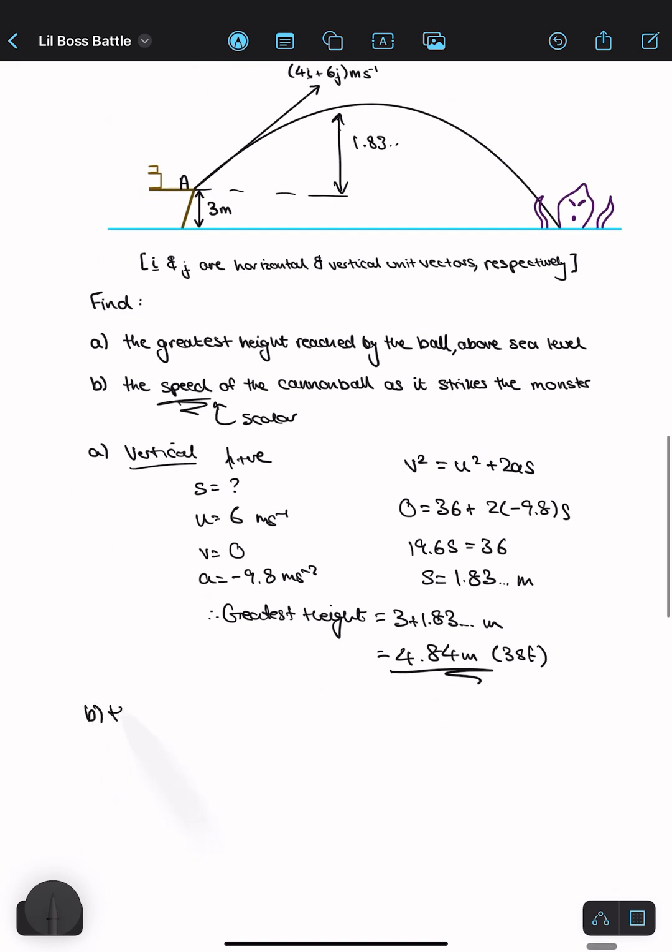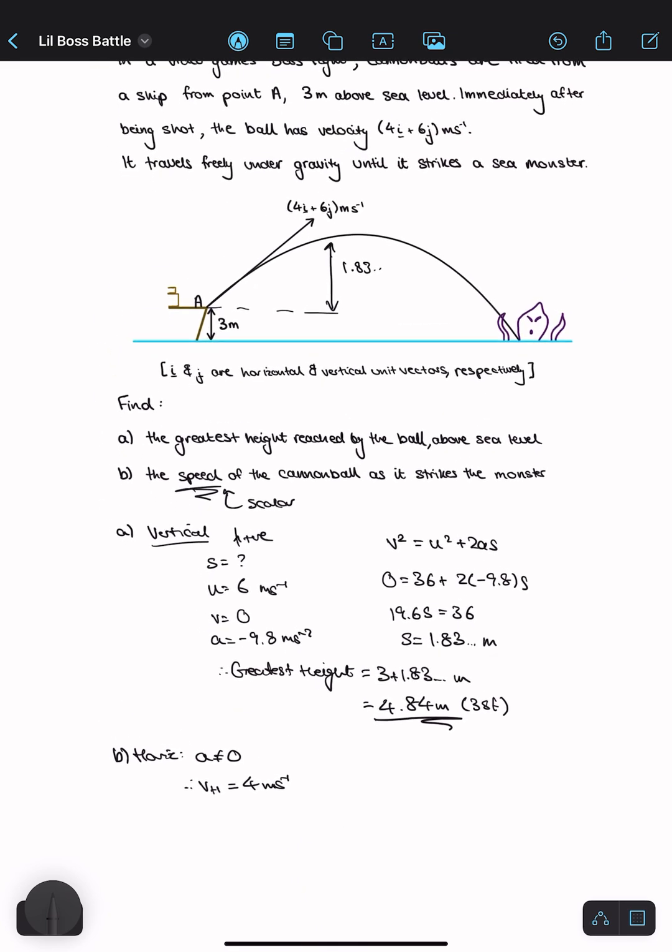For part B, the horizontal component: there is no acceleration in the horizontal direction. Therefore, the horizontal velocity is just equal to 4 meters per second because that is what was given to me in the vector.